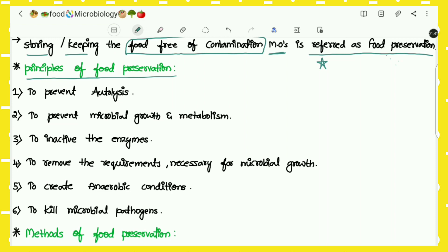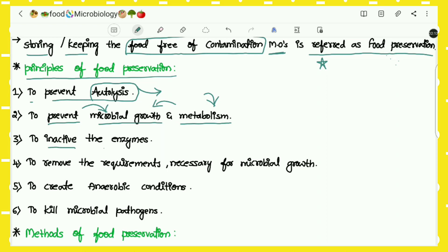Next come the principles of food preservation — that means the targets. The first is to prevent autolysis, which means self-spoilage. The second is to prevent microbial growth and metabolism — that is, to stop microbial growth and the metabolism of these microorganisms within the food. The third is to inactivate the enzymes, since enzymes also cause spoilage.